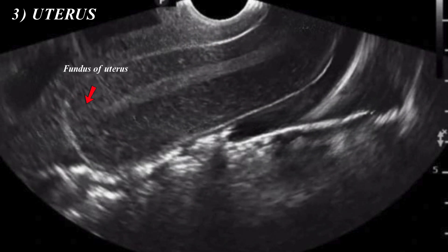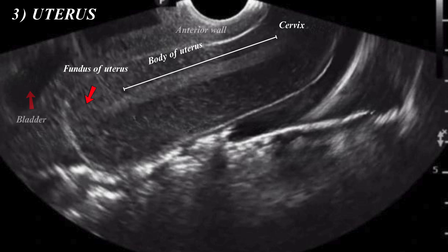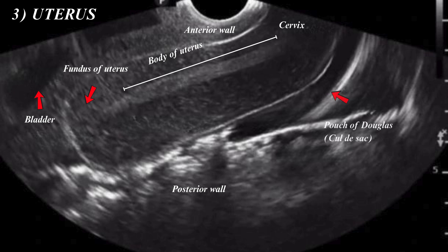The top of the uterus is called the fundus, while the rest of the uterus up to the cervix is called the body of the uterus. The wall of the uterus facing the urinary bladder is the anterior wall, while the wall facing posteriorly is the posterior wall. The area behind the posterior wall of the uterus is called the cul-de-sac or pouch of Douglas.